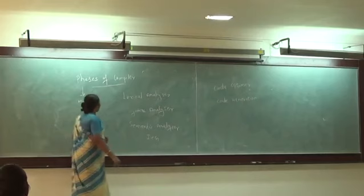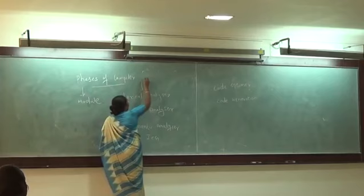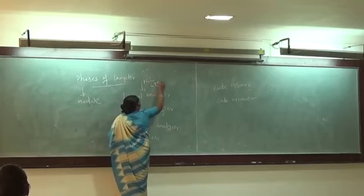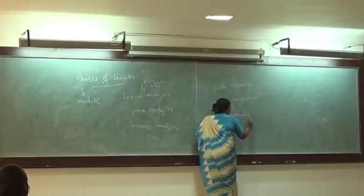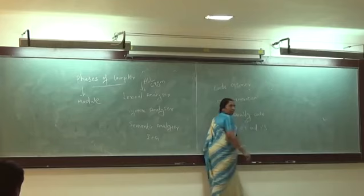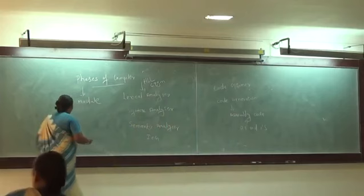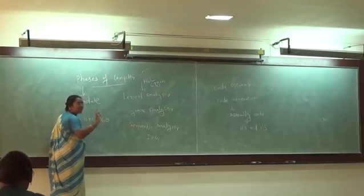Now we discuss one by one how the input language is processed by all the phases. We pass our program to the lexical analyzer, which processes it group by group. So the input is a high-level language — for example, it may be a C program. How the C program is going to be converted into assembly code of 0s and 1s. Take my example: the input is A equal to B plus C into 60.